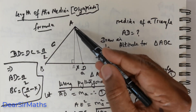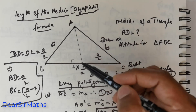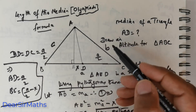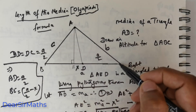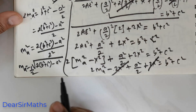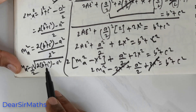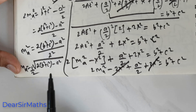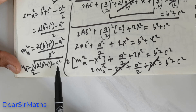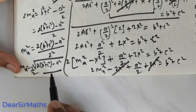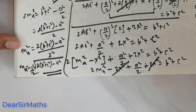As I mentioned, there can also be a median drawn from vertex B and from vertex C. What you need to do is subsequently change the values you see here. Since the median is drawn from vertex A, we subtract A squared. If the median is drawn from vertex B, you subtract B squared. If drawn from vertex C, you subtract C squared. So that is the end of this particular session. Thank you everybody.